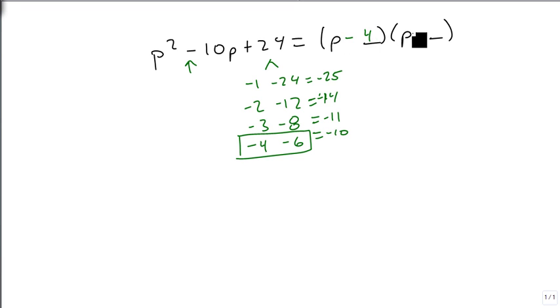We're going to put a minus 4 and a minus 6. If we FOIL this out, we get P squared minus 6P minus 4P plus 24, which is P squared minus 10P plus 24, which is our original.